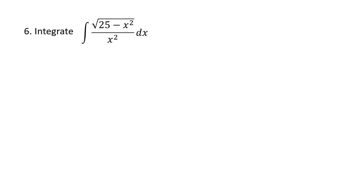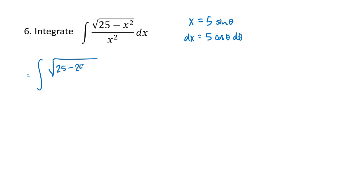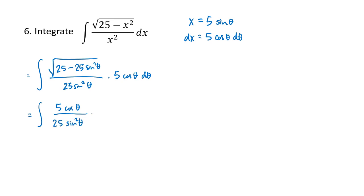For the last example, we have the square root of 25 minus x squared — that's the a squared minus x squared pattern — so we substitute x equals 5 times the sine of theta, and dx equals 5 times the cosine of theta d theta. Plugging everything in, we get the square root of 25 minus 25 sine squared theta, all divided by 25 sine squared theta, times 5 cosine theta d theta. Inside the square root we have 25 cosine squared theta, giving 5 cosine theta. The 5s multiply to 25 and divide out with the 25, leaving cosine squared divided by sine squared.